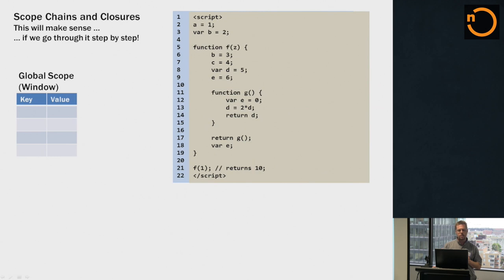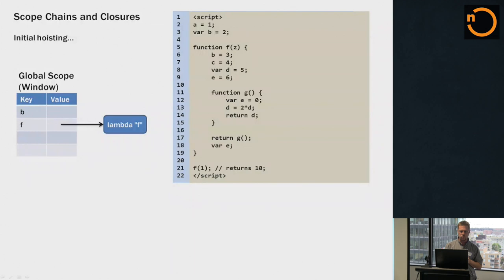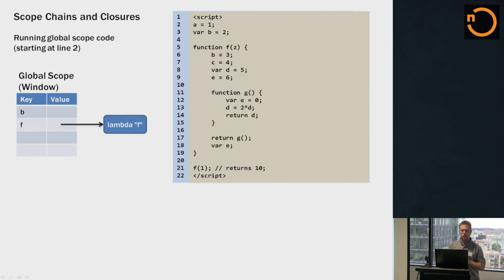The first thing we're going to do is hoisting at the outside level. Before we actually run anything, we're going to do hoisting out here — looking in the outermost level of code for vars and function declarations. We find a var B and a function declaration for F. We're going to create an entry in the scope object for B and one for F, and the one for F is going to be bound to the function object we're calling F. After global hoisting, we have B, we have F, and we have an actual function object. Then we run line 2: A equals 1, we look for A, we don't find it, and we end up creating an A out in the global scope.